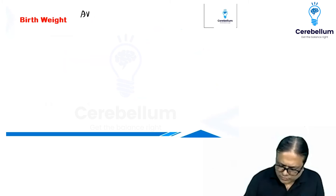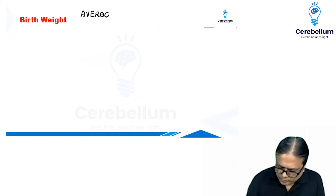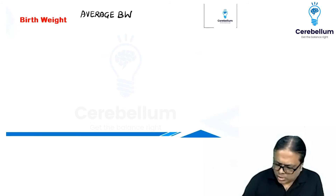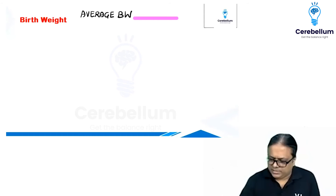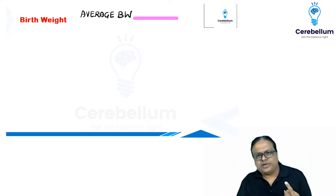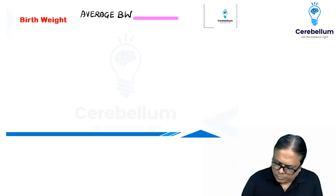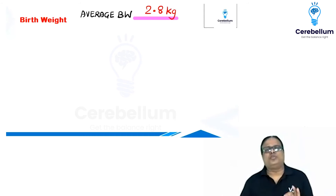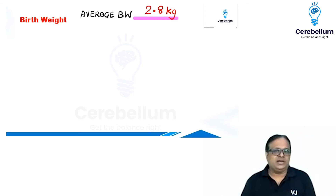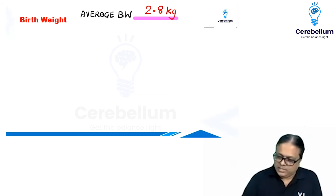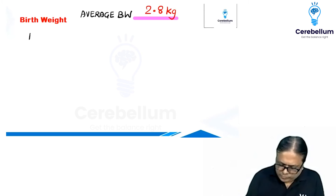First question: what is the average birth weight in India? These are all one-word answers from older FMG papers. I am seeing different answers — 2.5 kg, 2.8 kg, 3 kg, 4 kg. The correct answer is 2.8 kg. You cannot mark 2.5 kg because that would mean almost everyone is low birth weight at the time of birth, which is not possible.